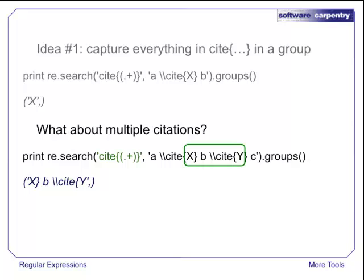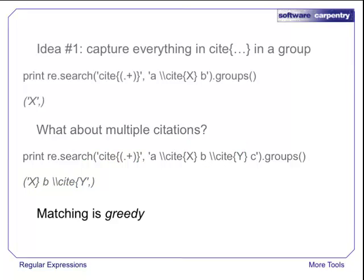It looks like we're capturing the text between the citations. The reason is that regular expression matching is greedy. It matches as much text as it can, and the dot in dot plus will match all the characters from the first curly brace to the last one, including the intervening citations and curly braces.